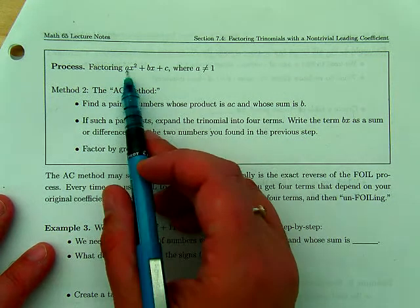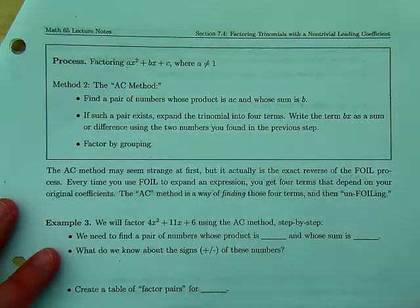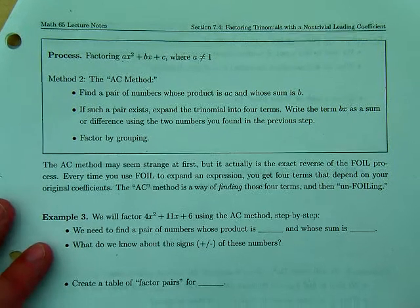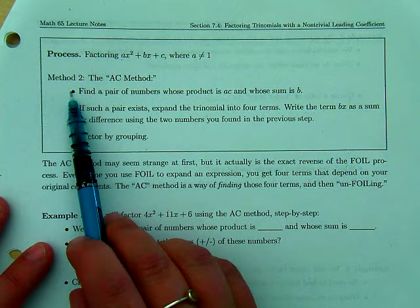Before when a was one, we could just go, oh, x times x gives us x². So this is a different method. Last time we were talking about the guess and check method. This time we're going to be doing the AC method.